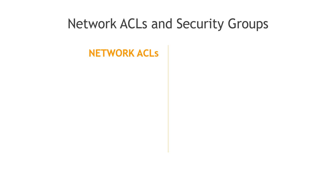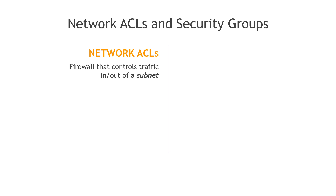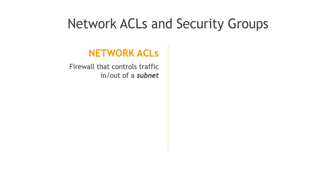Starting with NACLs, this is a firewall that controls traffic in and out of a subnet, so it's attached at the subnet level — and you'll see that here in the diagram. It has rules for allow and deny, and a common use case is to deny traffic from a particular IP address, say a known hacker.